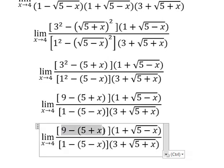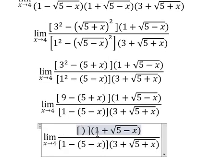We open the parentheses. We have negative x, and 9 minus 5 gives us positive 4. Here, 1 minus 5 gives us negative 4. Negative with negative gives positive x.